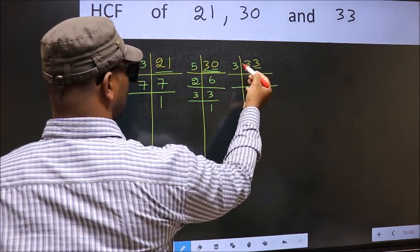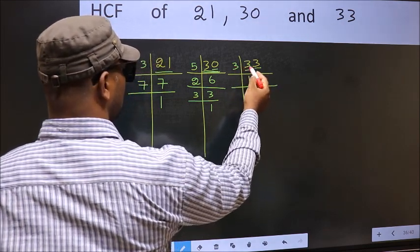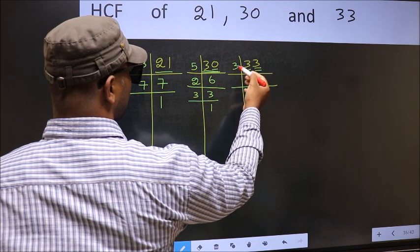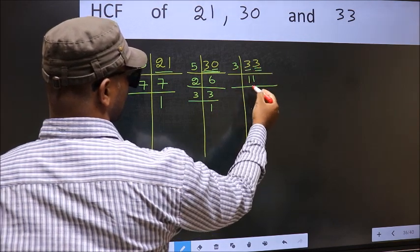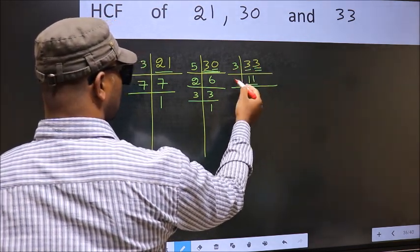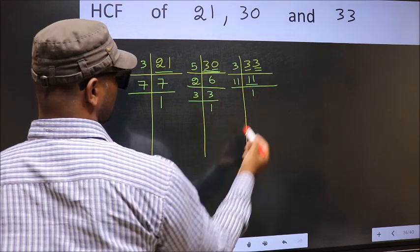33 divided by 3 is 11. 11 is a prime number, so 11 times 1 is 11.